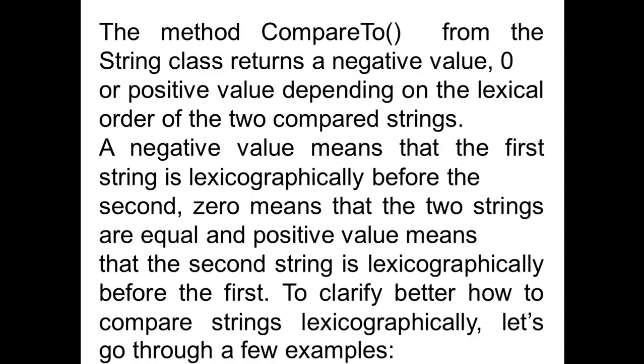Zero means that the two strings are equal. A positive value means that the second string is lexicographically before the first.